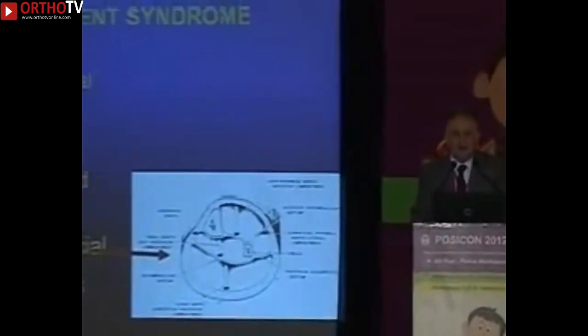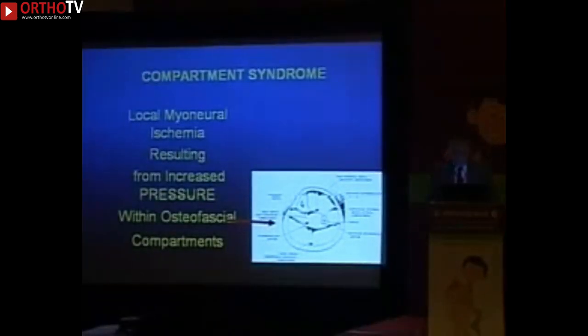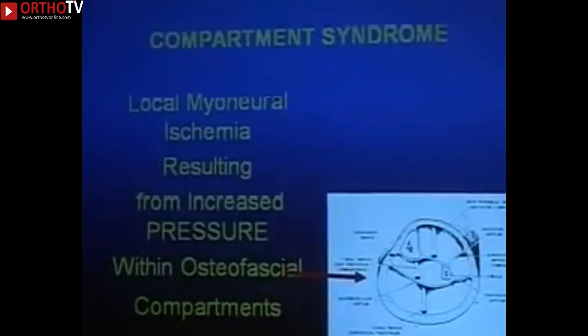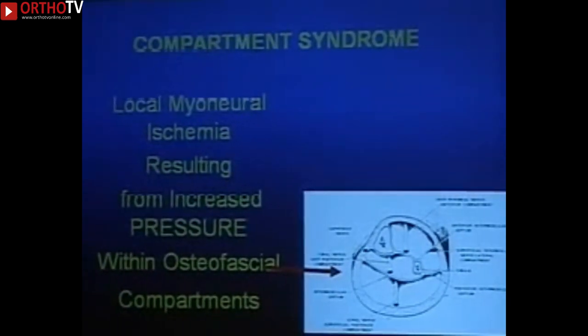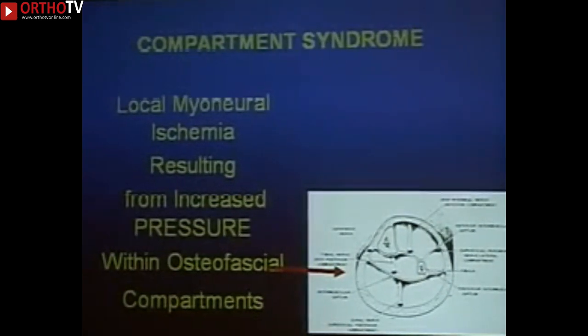Acute compartment syndrome in children is a low-tech diagnosis, meaning you don't need all the pressure measurements — you need a basic understanding of what it is, the anatomy, and a good physical examination to make the diagnosis and provide treatment. A compartment is required, and the classics are in the forearm and the leg. With these compartments and trauma, you get increased fluid pressure which eventually cuts off circulation to the muscles and nerves, giving the end result of a Volkmann's contracture.